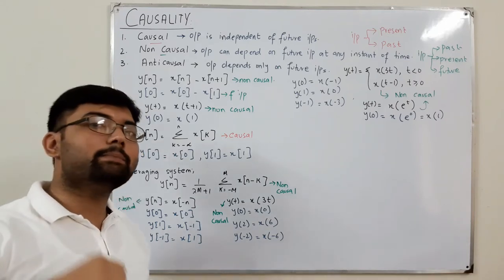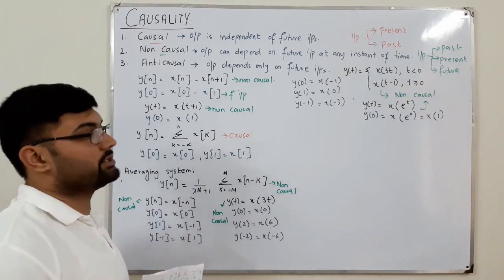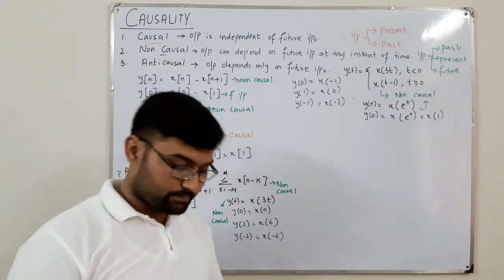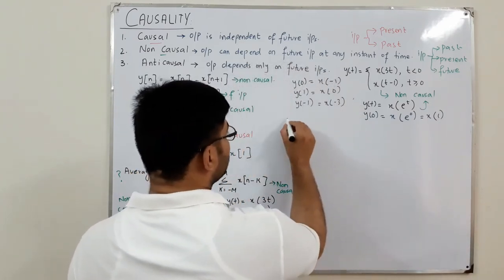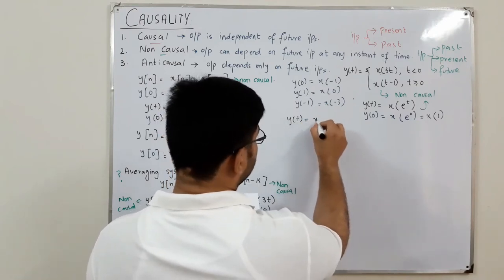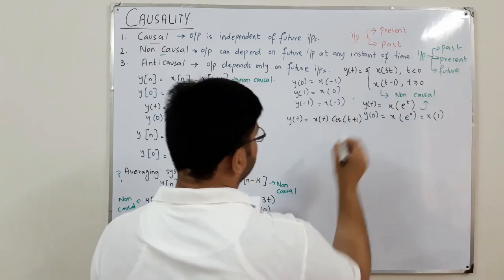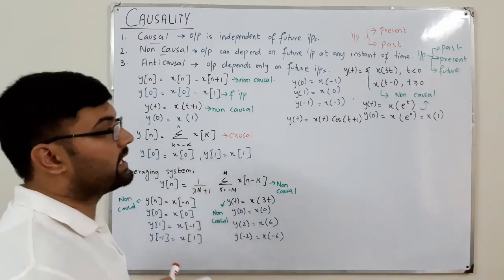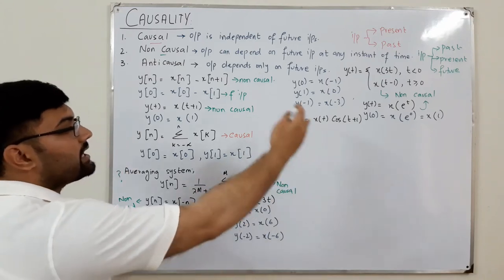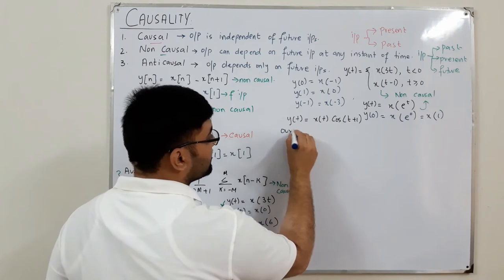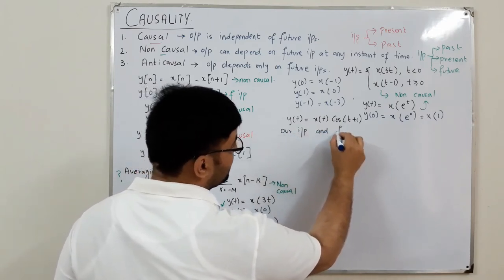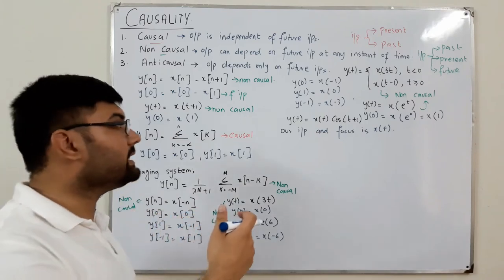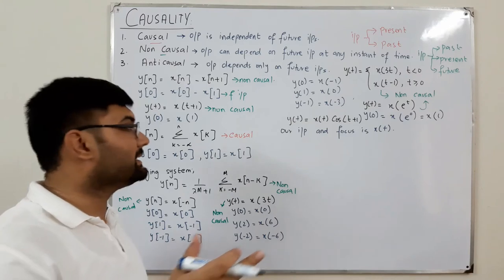An important note: the properties of a system are independent of any coefficient or multiplied function. For example, in y(t) = x(t) · cos(t+1), the term cos(t+1) is just another function of t — it is not the input. Our focus is only on x(t).